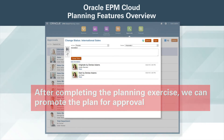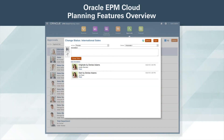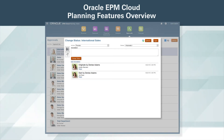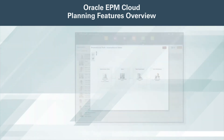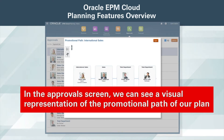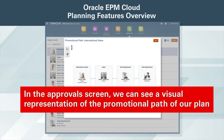We can add annotations to the submission before promoting. Once the plan is submitted, data is locked and cannot be changed. In the approval screen, we can see a visual representation of the promotional path of our plan.